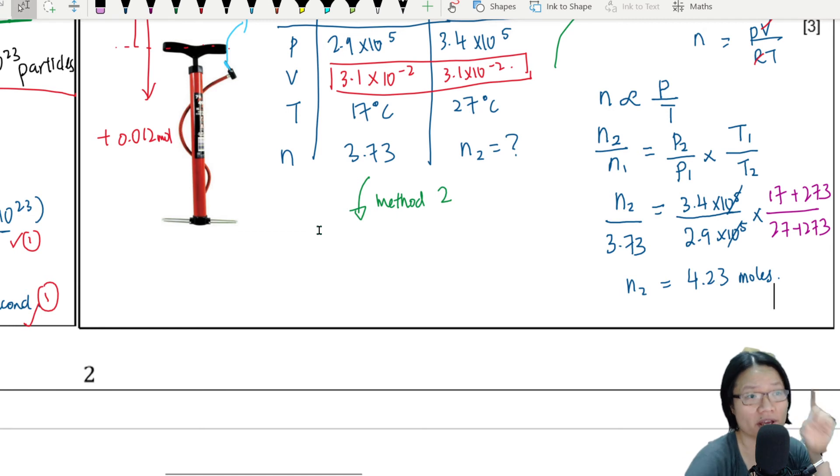All right, so this is not the end yet, because I need to know how many times I need to pump the thing. So if I want to find the number of strokes needed, I need to find how much gas added. So hence, I can say that the gas added is equal to n2 minus n1, which is 4.23 minus the initial number of moles, 3.73.